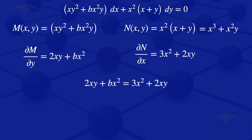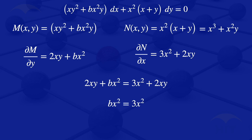Looking at the left-hand side, we have 2xy, and on the right-hand side we have 2xy as well. Taking 2xy to the right-hand side gives 2xy − 2xy = 0, leaving us with bx² = 3x². By comparison of the coefficients of x², we see that b = 3. So for this differential equation to be exact, b must equal 3.